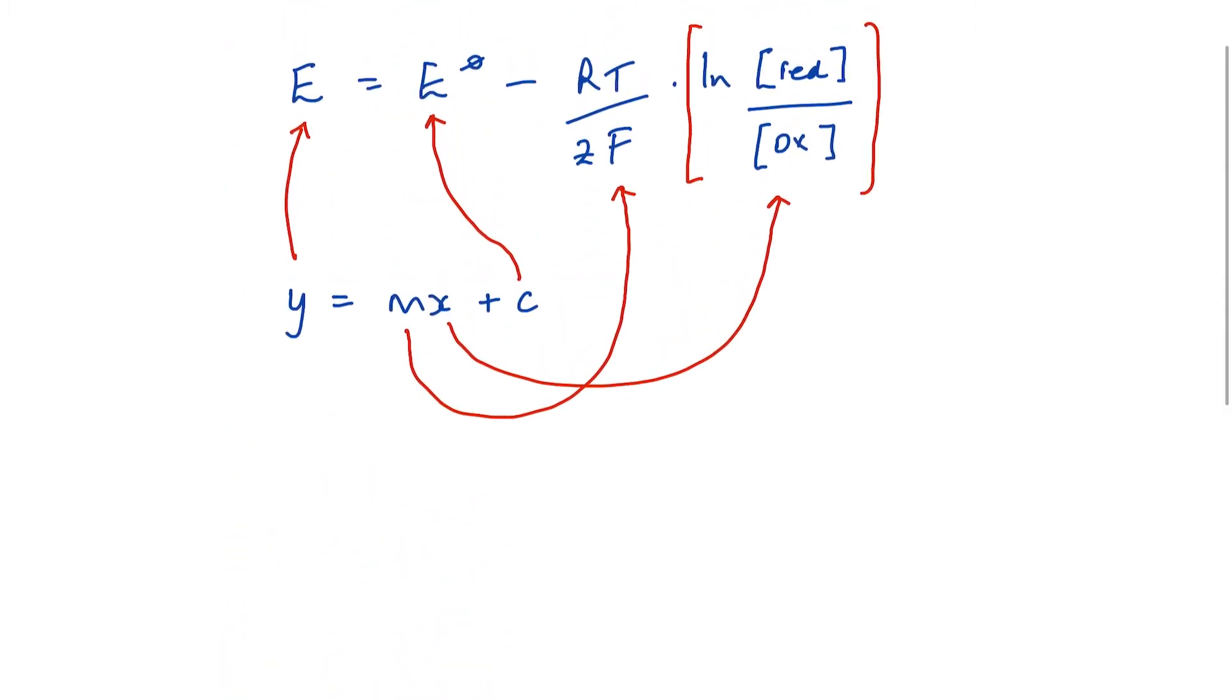Let's go back to our Nernst equation in the form of y equals mx plus c. If I were to plot a graph of y, the non-standard electrode potential, against x, because that's generally what graphs are plotted against—x against y as far as I'm aware—the ln of the concentration of the reduced species over the oxidized species.